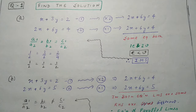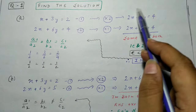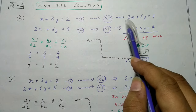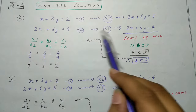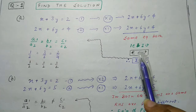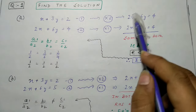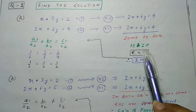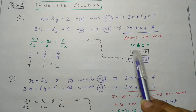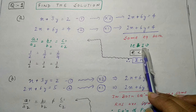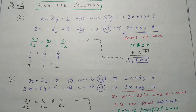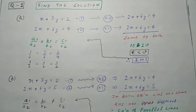दोनो equations same बन गईं, इसका मतलब ये 2 equations actually एक ही equation थीं। एक equation में 2 variables (x, y) हैं। Overall 1 equation and 2 variable system है। जब number of equations less than number of variables होता है, तो इसका infinitely many solution होगा।